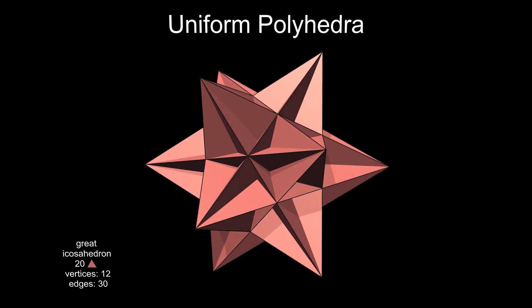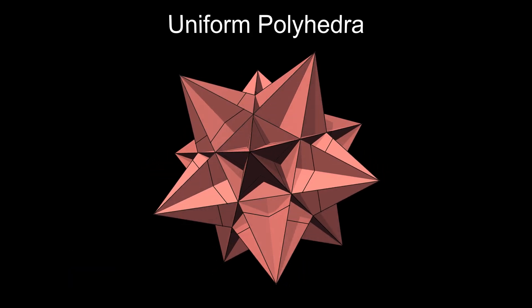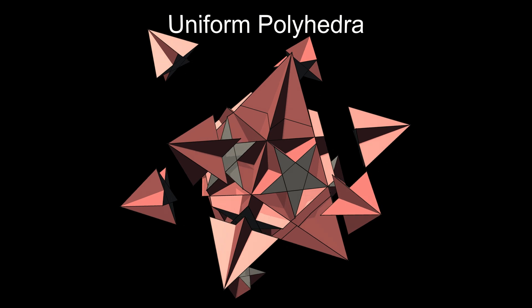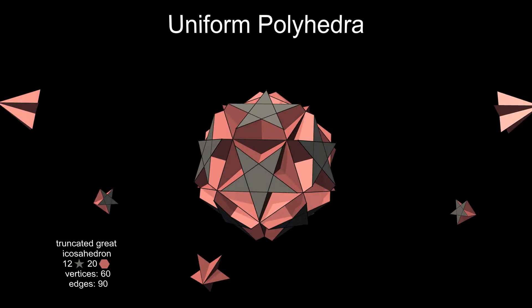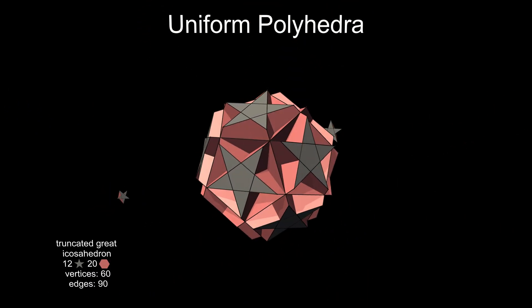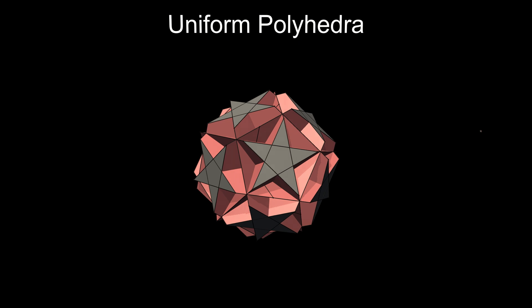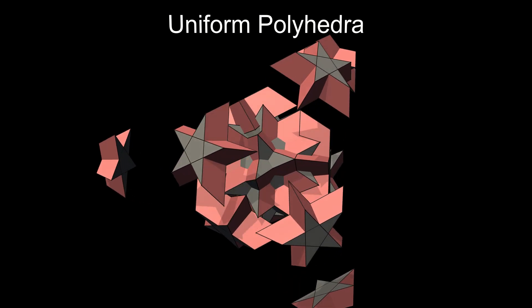Turning to the great icosahedron, truncation gives us the truncated great icosahedron, which resembles the truncated dodecahedron.